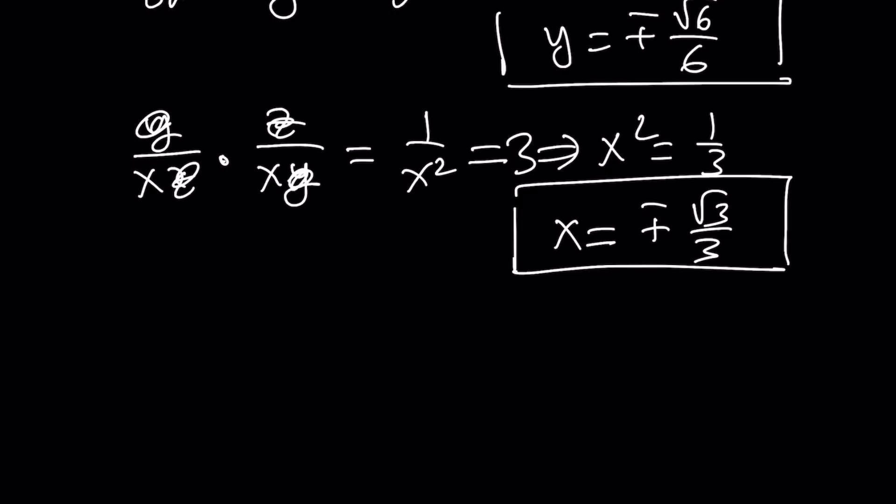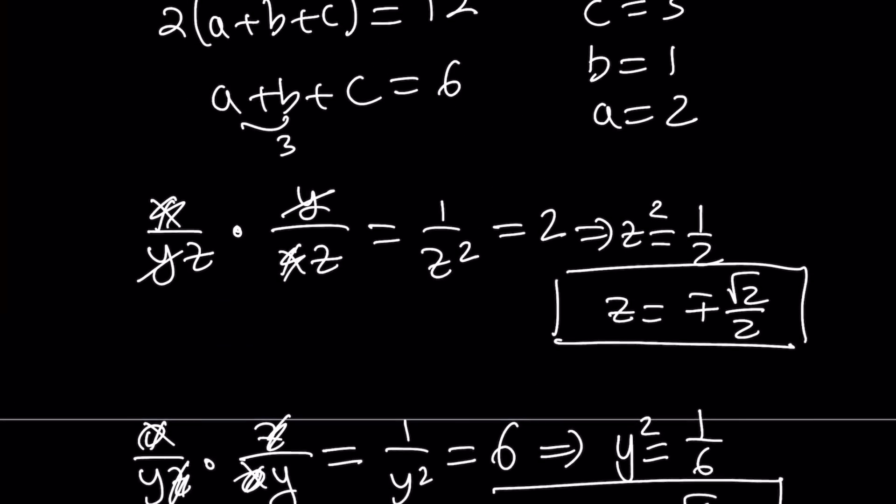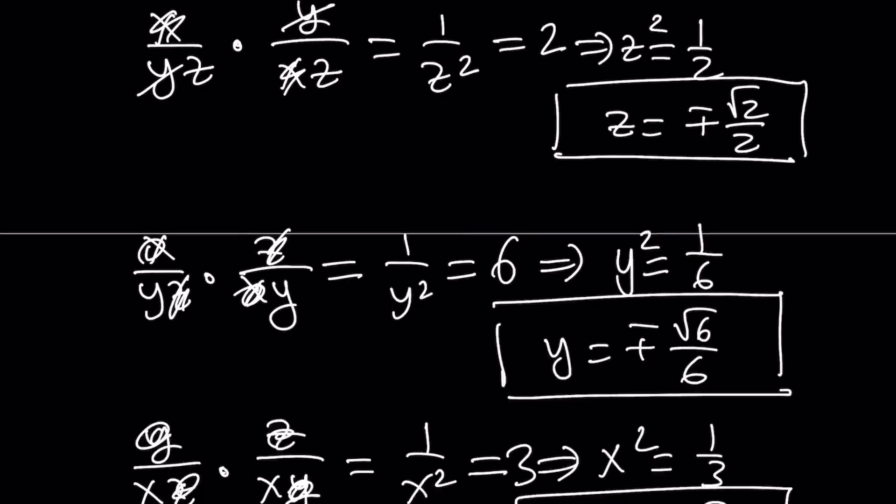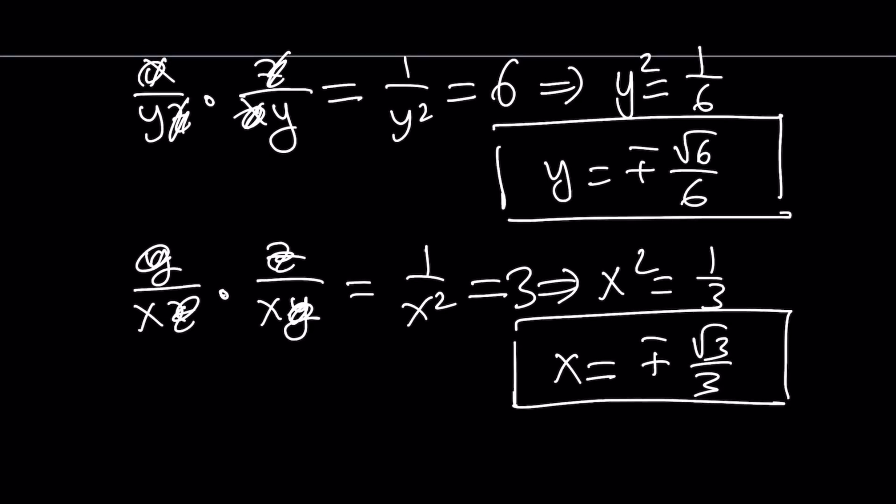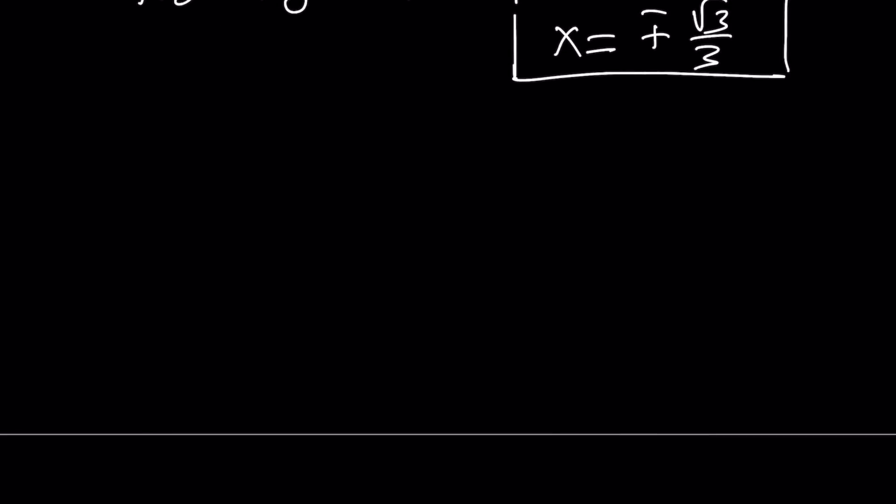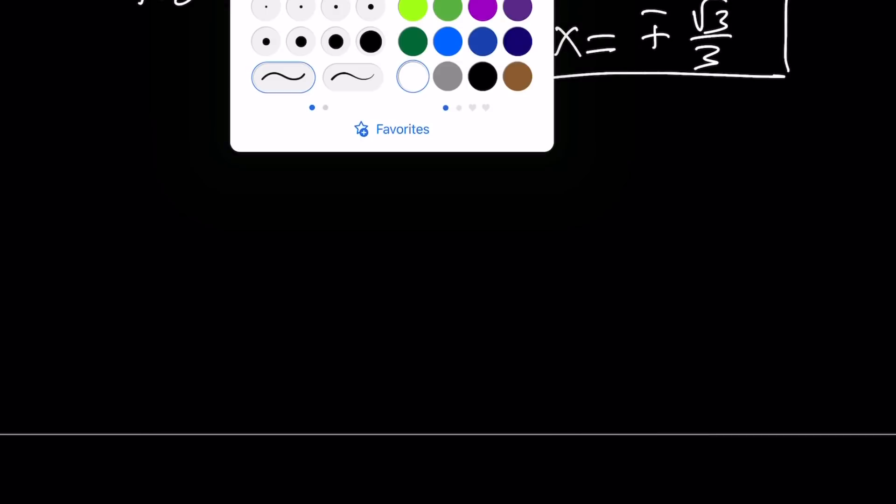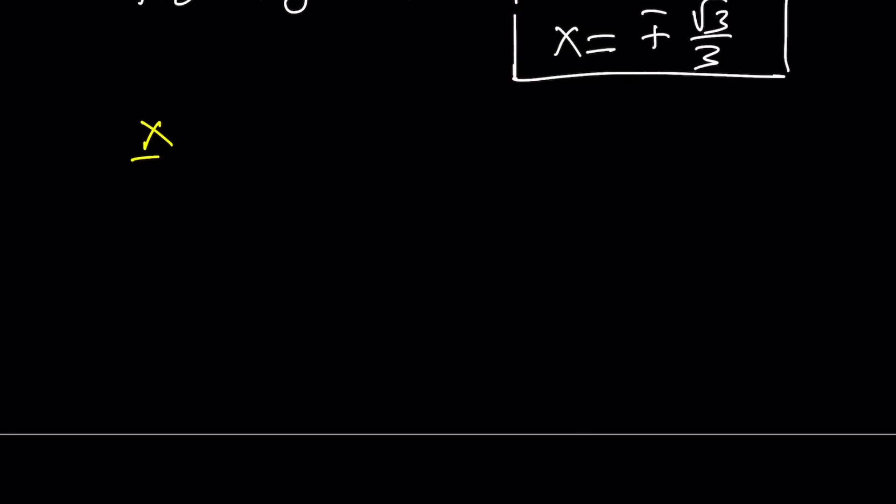Now, one thing that we have to notice. A, B, C are all positive values. What is that supposed to mean? Well, notice that we're getting plus minus values here, but are they just free? Can they all be negative? Can they all be positive? Can one of them be negative? How do you put those together, right? Here's one thing we need to notice here, that X over YZ, for example, or Y over XZ, or Z over XY, they're all positive.